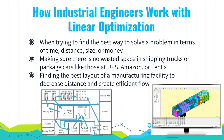So how do industrial engineers work with linear optimization? When an industrial engineer is trying to find the best way to solve problems based on time, distance, size, or money, they want to make sure there is no wasted space in shipping trucks or package cars like those UPS, Amazon, or FedEx use. They could also be trying to find the best layout of a manufacturing plant to decrease the distance workers travel between spots, creating a more efficient flow of work in the plant.